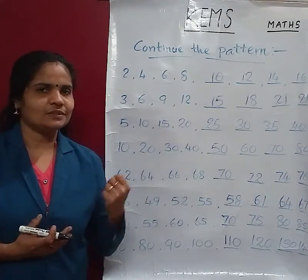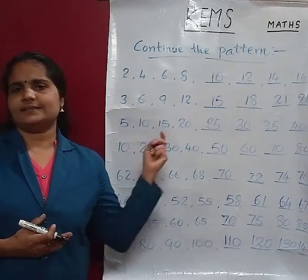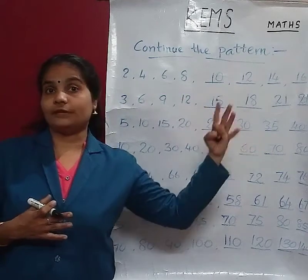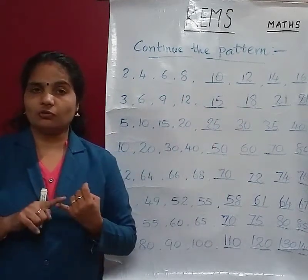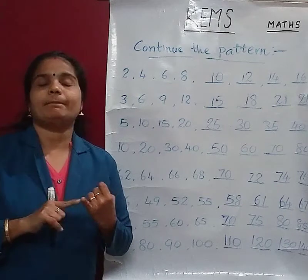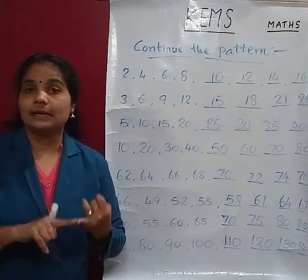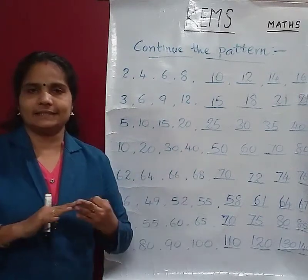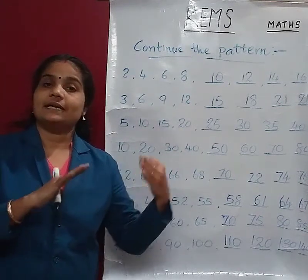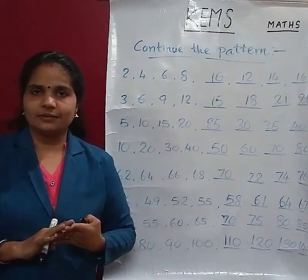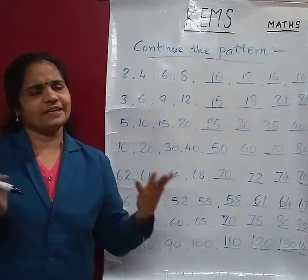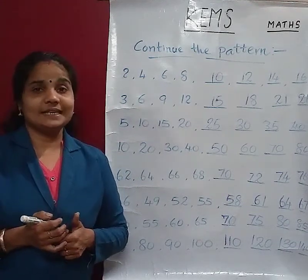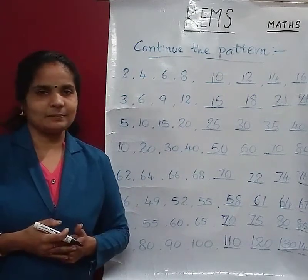Okay, so it is very easy. These are patterns — patterns of numbers. We can make patterns of numbers, patterns of shades, patterns of different things, then patterns of different lines, curves, etc. That is very easy. Clear. Okay, so children, we will meet in the next class. Bye!